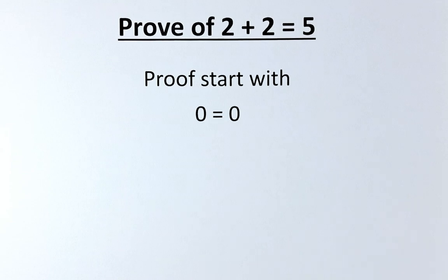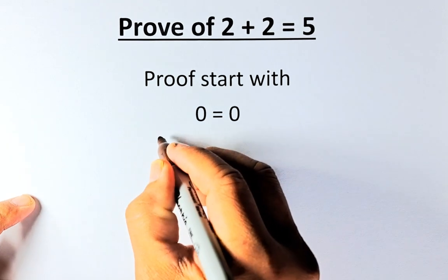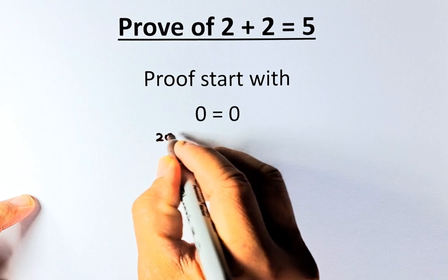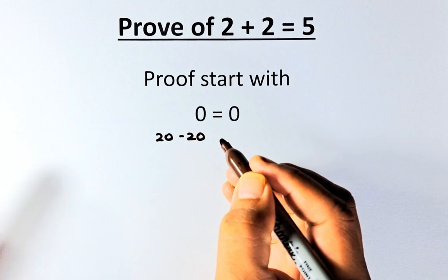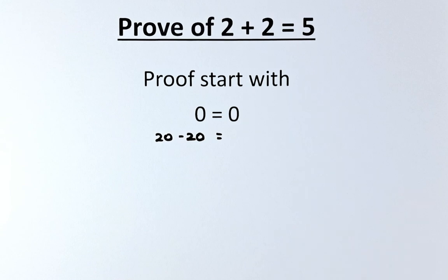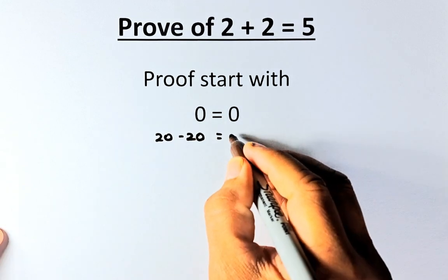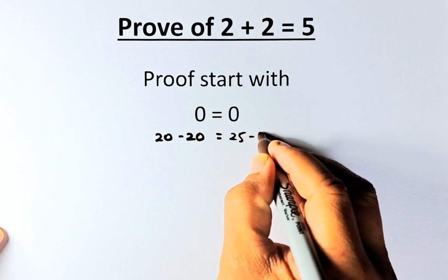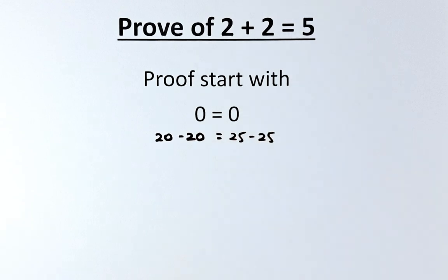Now we're going to convert 0 into another form. So 0 is the same as 20 minus 20 on the left-hand side. Is that true? It's true, right? 20 minus 20 is 0. And on the right-hand side, we're going to do the same thing. Instead of 20, we're going to say 25 minus 25. So 25 minus 25 is also 0. That is the first step.